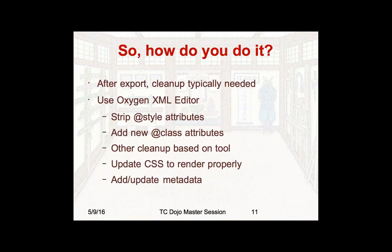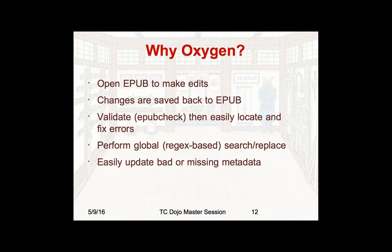So after you export from your tool, you'll need to do some cleanup. I recommend using Oxygen XML Editor. The things you'll likely need to do in most any EPUB generated from a tool would be to first strip out all the style attributes — if you have style attributes, they're going to override the CSS formatting you're trying to apply. You'll probably want to add some class attributes to assist in the styling. There will be other cleanup based on different invalid content the tool creates. And you'll want to update your CSS file to render the way you want it to, and add some new metadata.